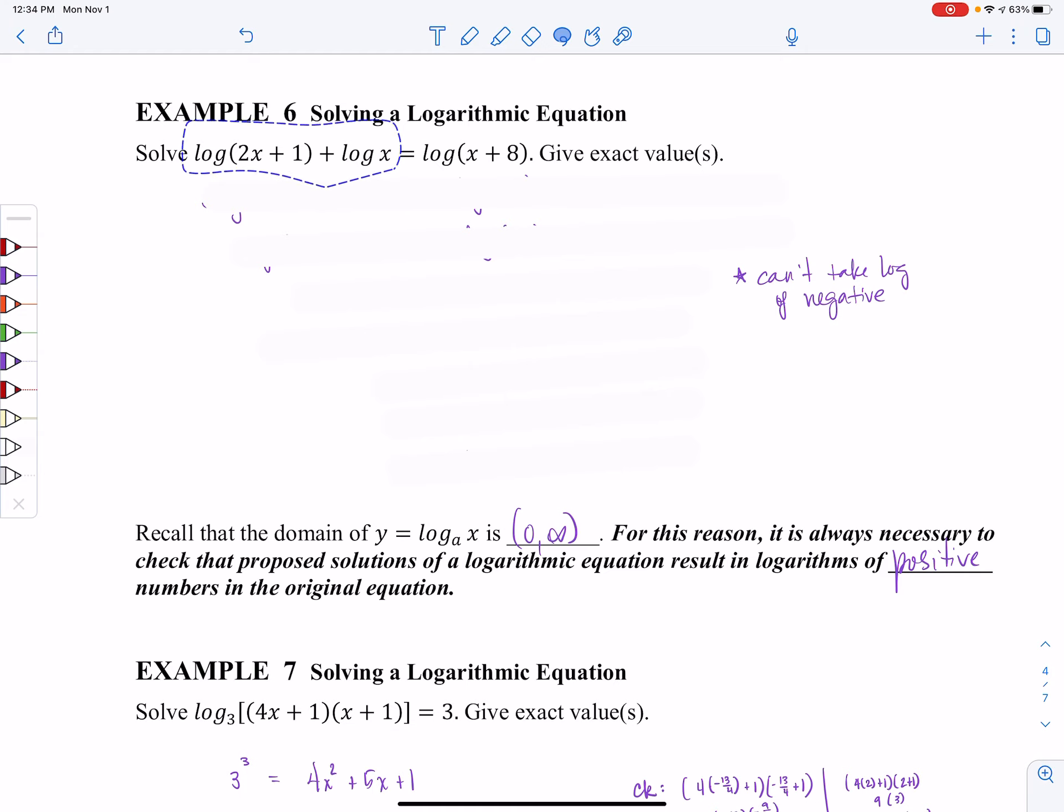We're going to use the concepts from section 4.3 when I learned how to condense my logs. So the very first thing I'm going to do is I'm going to use the product rule. Notice that this is a log plus a log. So my product rule says that I can condense that down to a single log of two things multiplied together. And then I'll go ahead and distribute my x.